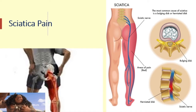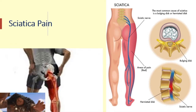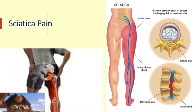Another manifestation is sciatica pain — pain and tenderness that radiates along the sciatic nerve. The sciatic nerve runs through the thigh and leg. The compression actually happens at the root or upper part of the sciatic nerve, but because of that compression, the pain radiates towards the entire leg — on the right or the left. The areas of pain, shown in red on the diagram, may also be caused by disc herniation on that part of the spinal column.